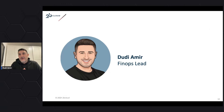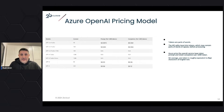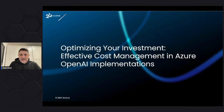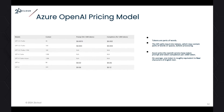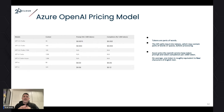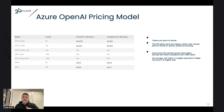First thing you need to know: Azure OpenAI is an expensive service. Azure OpenAI pricing is based on tokens. Think of every token as equal to approximately four English characters. You are charged by the prompt token and the completion token. The cost unit is based on 1,000 tokens.